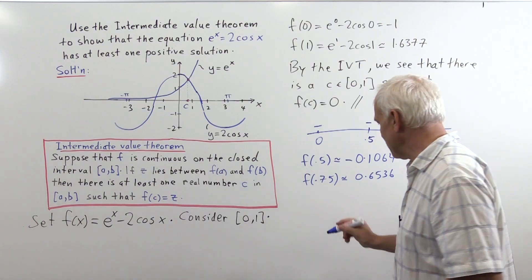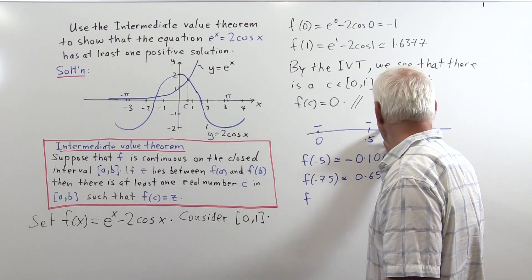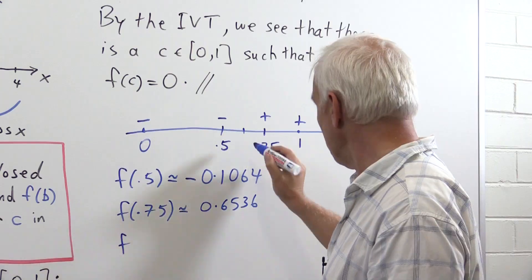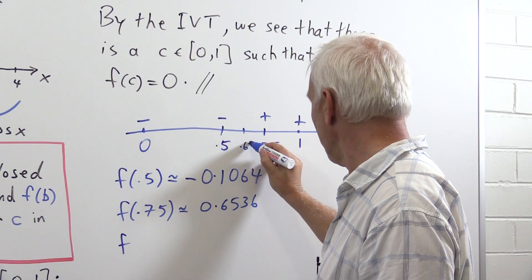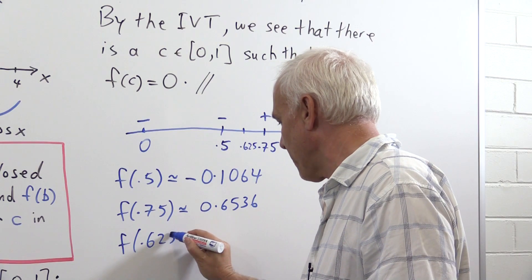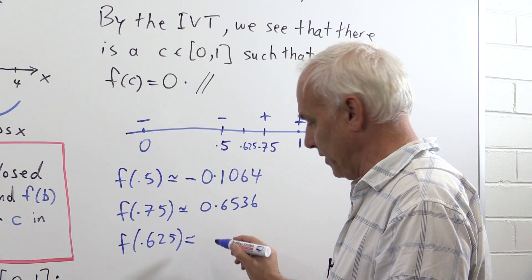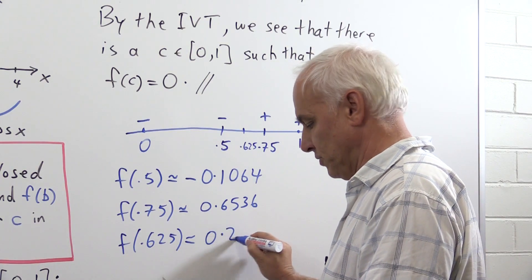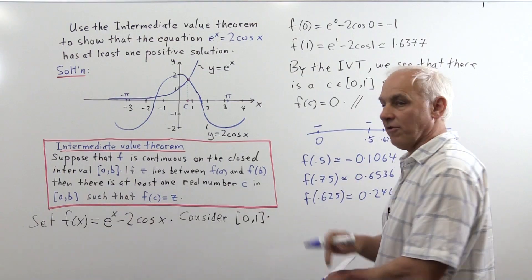To successively get at that, we would take the midpoint of that, which is 0.625, and calculate f at 0.625. That is roughly 0.2463, which is again positive.